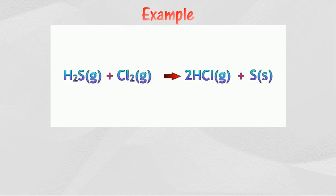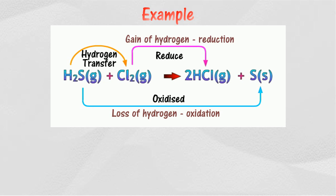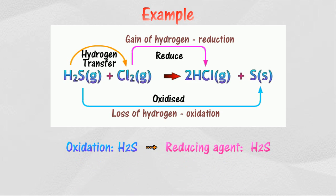In the reaction between hydrogen sulfide and chlorine gas, hydrogen sulfide loses hydrogen while chlorine gains hydrogen. Hydrogen sulfide is oxidized to sulfur — an oxidation process — while chlorine is reduced to hydrogen chloride — a reduction process.